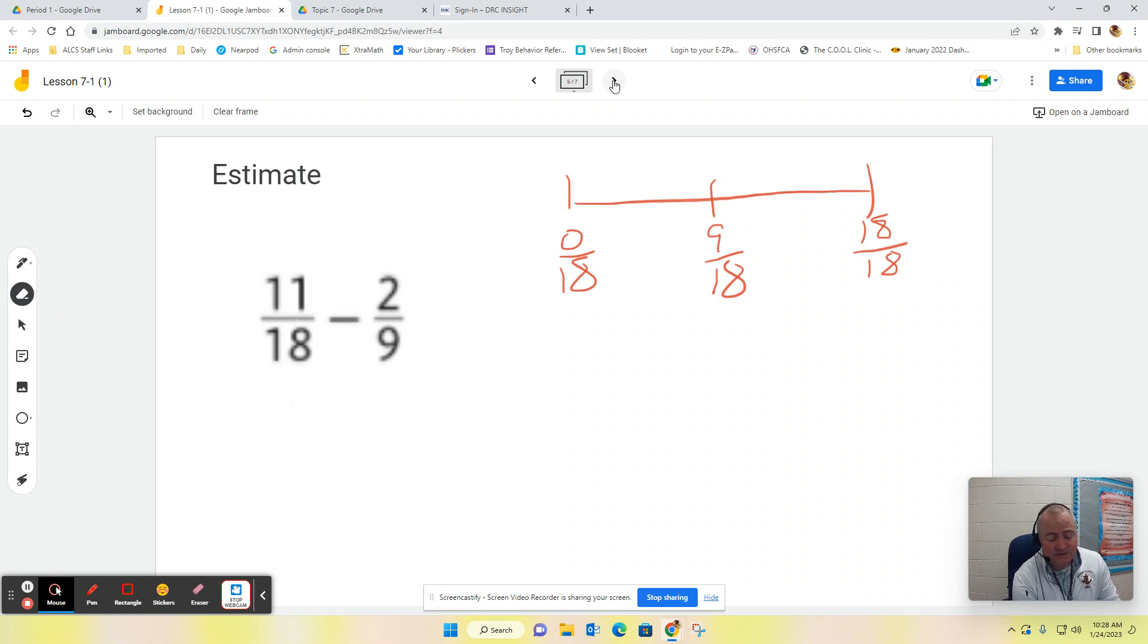So when I look at 11/18, if I'm using the number model up here, I'm going to say 11/18. Well, this would be nine, ten, eleven. Might be somewhere around here. I don't know. But it's going to be closer to a half than it is to one whole. So 11/18 is closer to 9/18. So 11/18 is going to estimate to one-half.